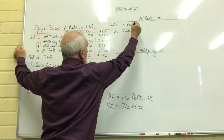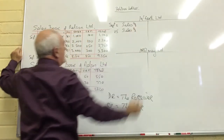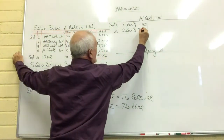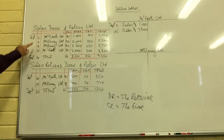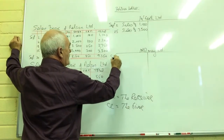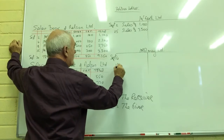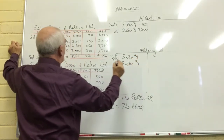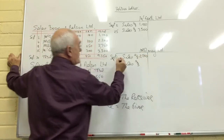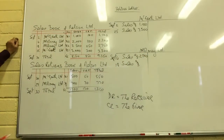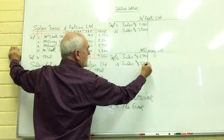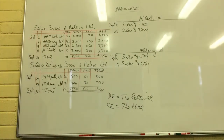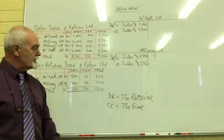I go to McGrath's account and on September the 2nd and on the 25th I write down 'sales' — getting the information from the sales day book — and I debit McGrath with £1,100 and £3,300. I debit McGrath twice because McGrath received. Similarly for Maloney on the 4th and the 18th, I debit Maloney with £2,200 for the September 4th transaction and £2,750 for the sales on the 18th.